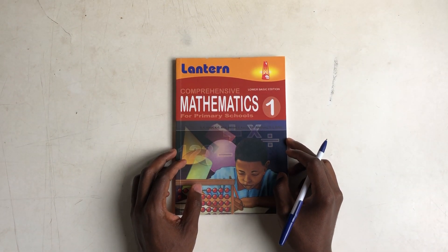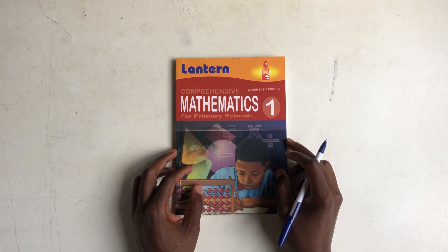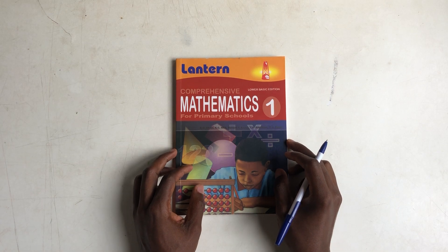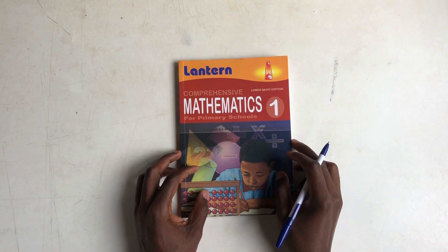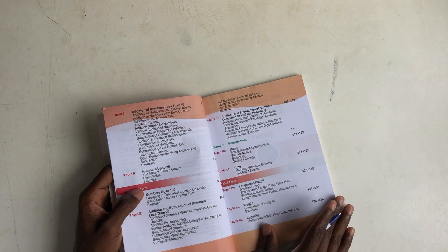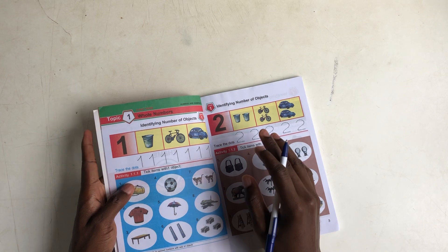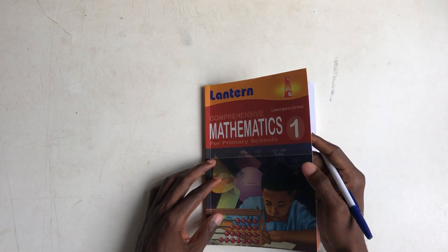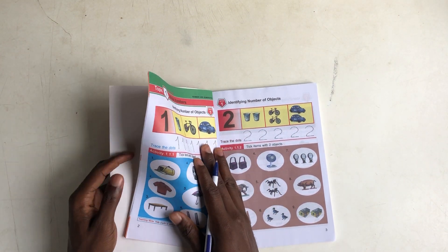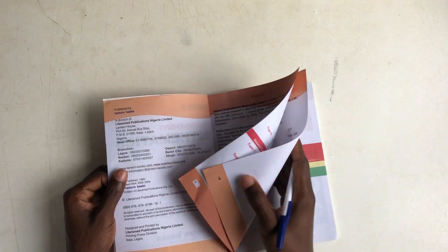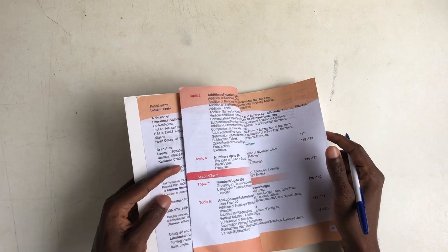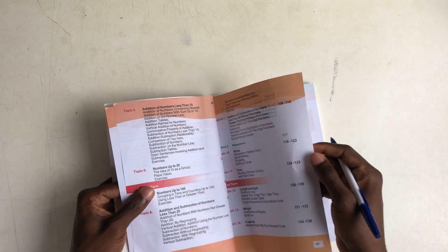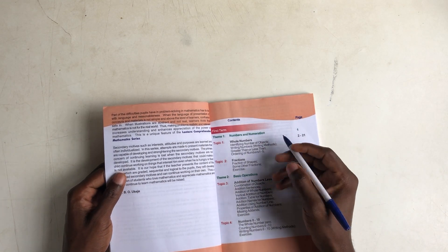Good day. Welcome to the primary one online class. I'll be taking you through mathematics and the textbook we are going to be using is the Lantern Comprehensive Mathematics Bookman. Numbers and numerations.